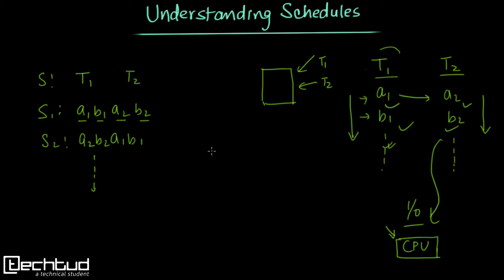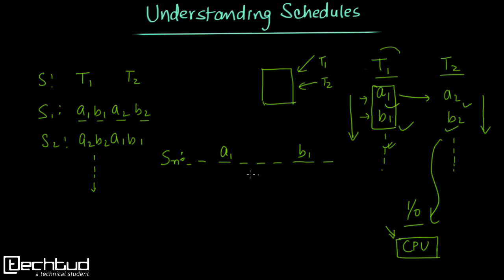From the previous lecture we understood that the execution order of operations must be the same as in the individual transactions. So in any schedule, B1 will always come after A1 — other operations may come in between, but A1 from transaction T1 must always be executed before B1.